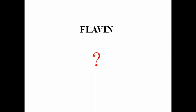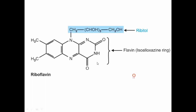First we will learn what is flavin, what is adenine, and what does dinucleotide mean. Looking at the flavin part in flavin adenine dinucleotide: flavin is basically part of riboflavin. This is the structure of the flavin, which together with the ribitol sugar group is known as riboflavin.